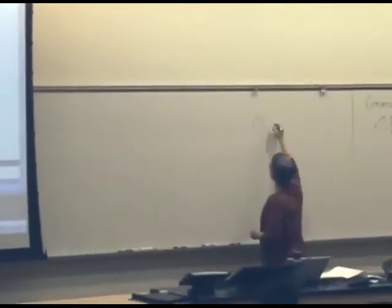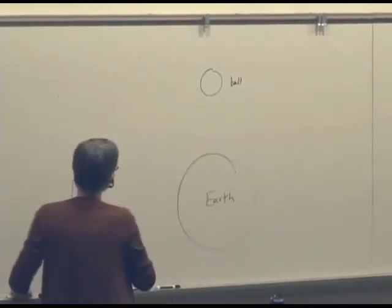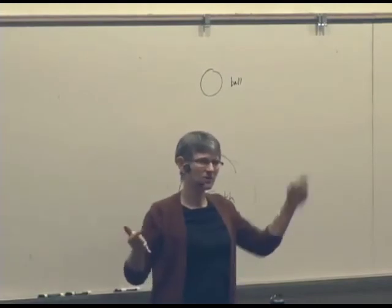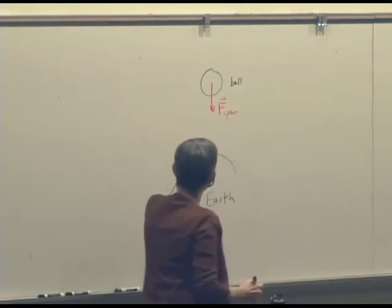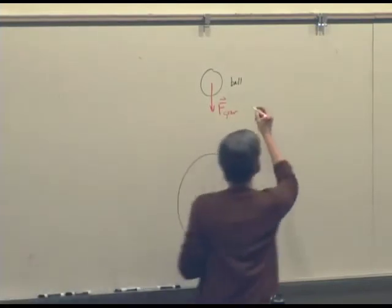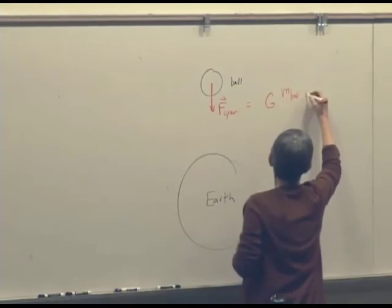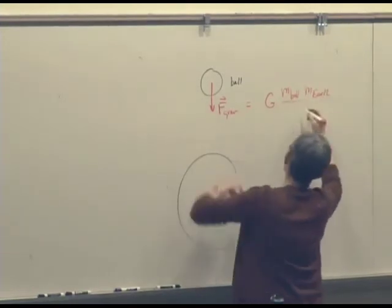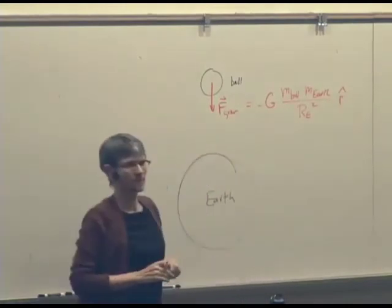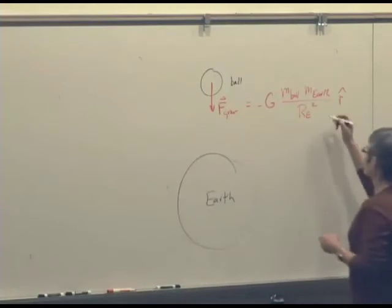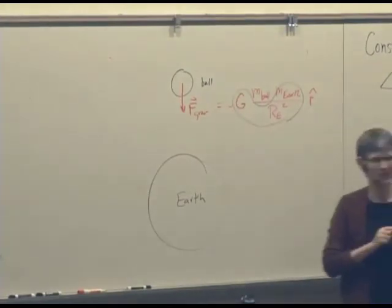So, here's the tennis ball. Here's the earth, not drawn exactly to scale. Okay, we all agree that the earth exerts a gravitational force on the tennis ball in the minus y direction, presumably, right? And that force is equal to g times the mass of the tennis ball, times the mass of the earth, divided by more or less the radius of the earth squared, minus r hat, right? And remember that this approximate form we've been using, the m little g thing, that piece turns out to be little g. Okay, that's a gravitational force.